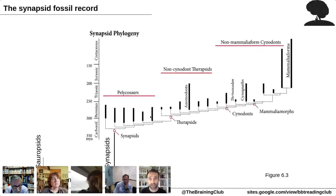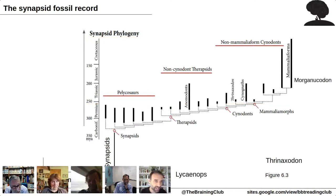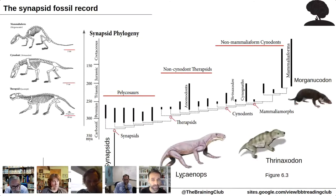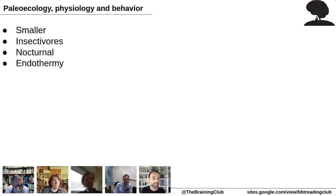It was mainly the mammaliaforms that lived through the Mesozoic Era — the Triassic, Jurassic, and Cretaceous — known as the age of reptiles. Our mammaliaform ancestors had to live with these large animals that wanted to eat them. They escaped by becoming nocturnal and much smaller. You can see the comparison in size of Lycaenops, Thrinaxodon, and Morganucodon — the skeletons show how much they shrank. They became very tiny, nocturnal, lived in trees, mainly eating insects.